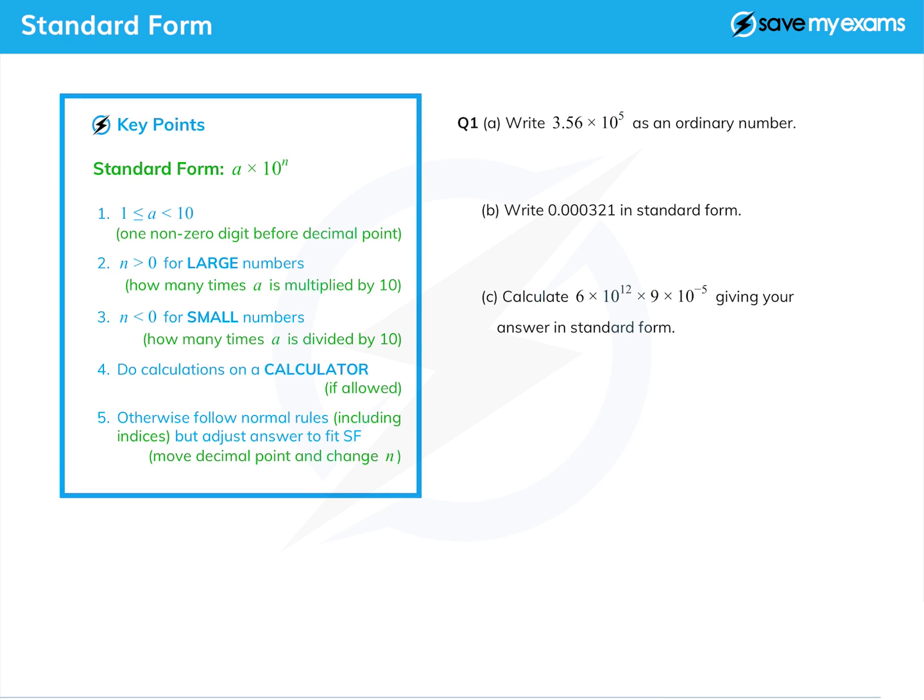And then we're multiplying by 10 five times, so it's going to be a big number. Let's do the question. It's going to start 3, 5, 6, and the only question we have to answer is how many times we multiply by 10. Well, we've already said five times. So the decimal point was here, and so we move it once, twice, three times, four times, five times to there.